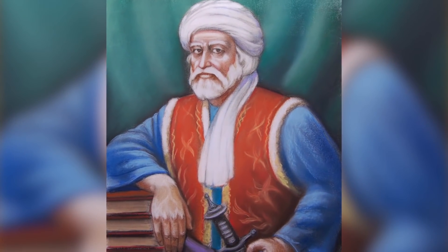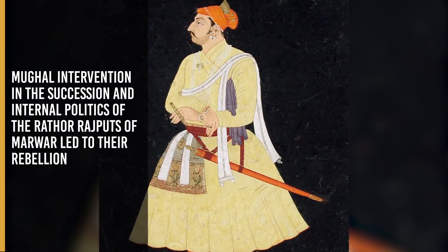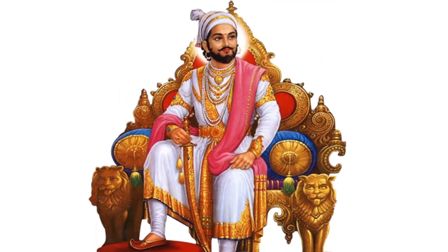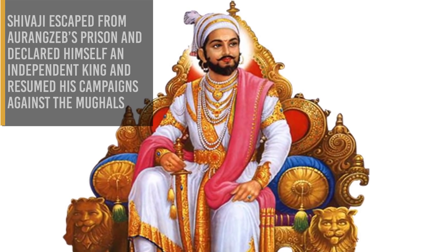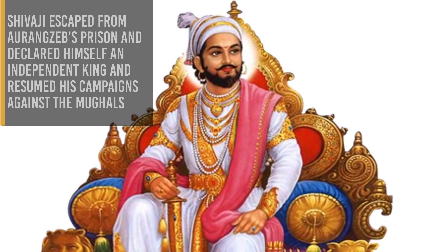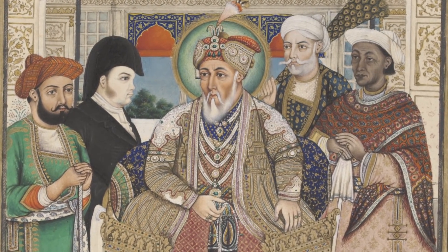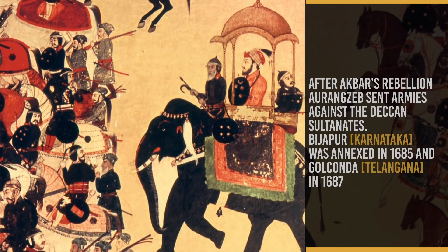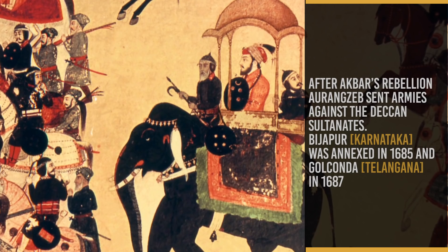Campaigns in the northwest against the Yusufzai and the Sikhs were temporarily successful. Mughal intervention in the succession and internal politics of the Rathore Rajputs of Mewar led to their rebellion. Campaigns against the Maratha chief Shivaji were initially successful. However, Shivaji escaped from Aurangzeb's prison, declared himself an independent king, and resumed his campaigns against the Mughals. Prince Akbar II rebelled against Aurangzeb and received support from the Marathas and the Deccan Sultanates. After Akbar's rebellion, Aurangzeb sent armies against the Deccan Sultanates — Bijapur, which was in Karnataka, was annexed in 1685, and Golconda in 1687.